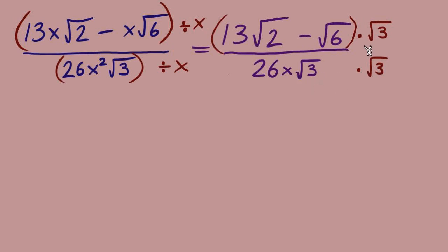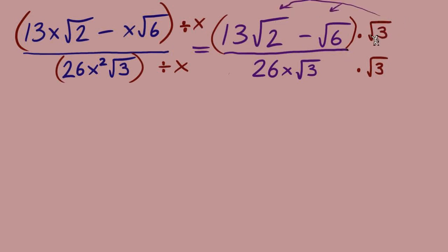Here's the next part of the problem where we need to be cautious about the fact that there are multiple terms in the numerator. To multiply the numerator by radical 3, it's going to have to be distributed. Just like we need to be able to divide from every single term, when we go to multiply, we need to make sure that we multiply to every single term. To multiply just to the radical 6 but not to the radical 2 is an error.